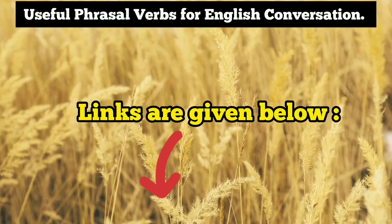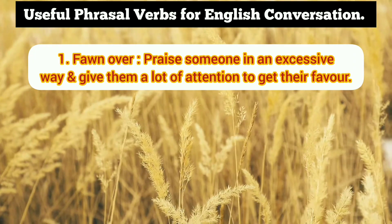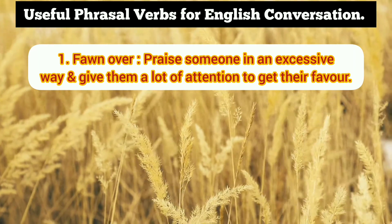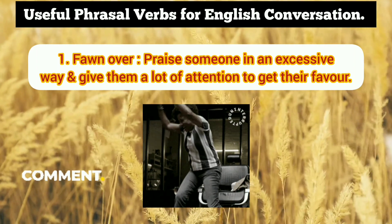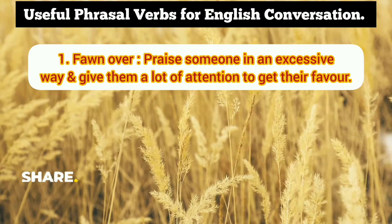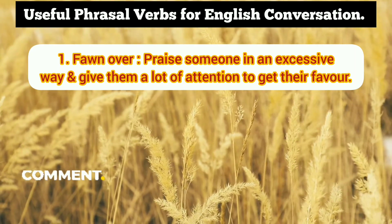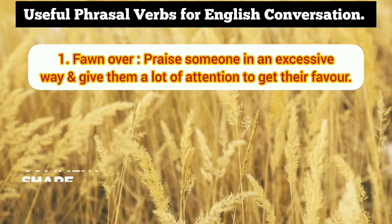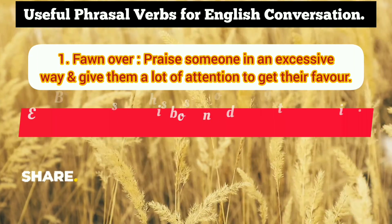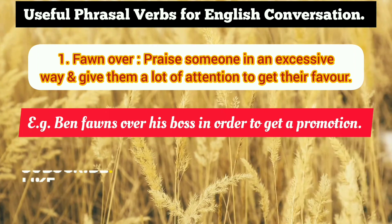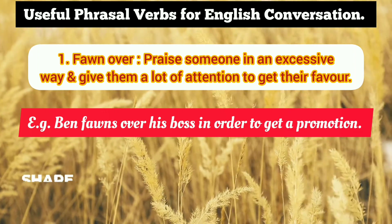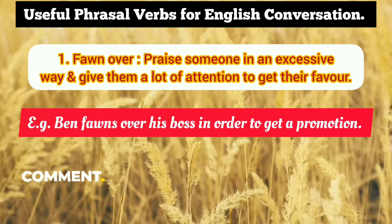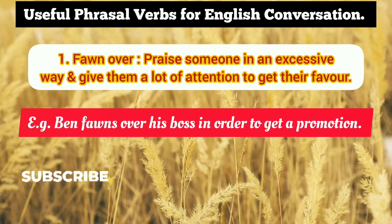The first phrasal verb is 'fawn over.' Fawn over means to praise someone in an excessive way and give them a lot of attention to get their favor. You praise someone unnecessarily in an excessive way — attention they don't deserve — just to gain some favor. Example: Ben fawns over his boss in order to get a promotion.